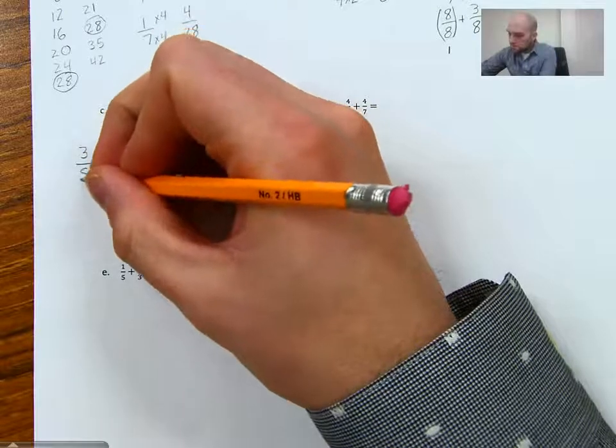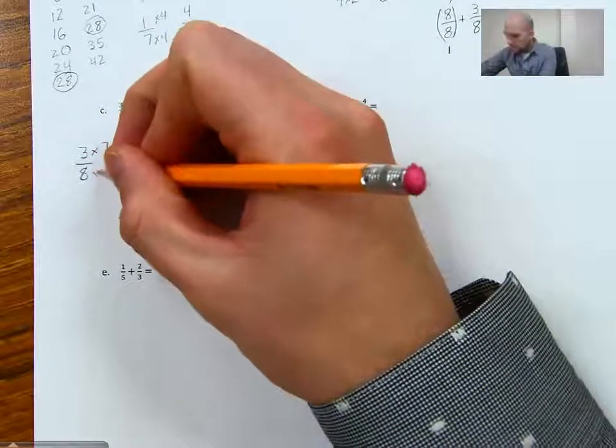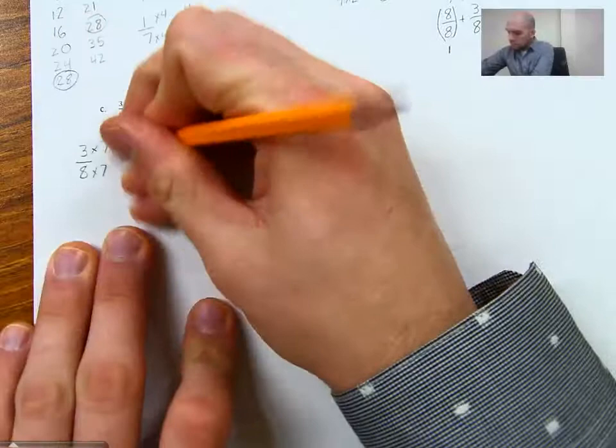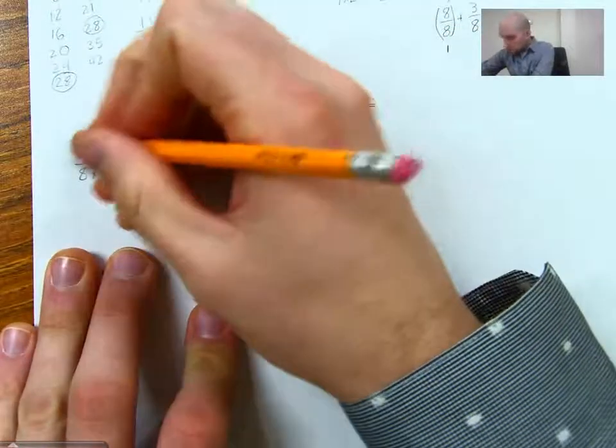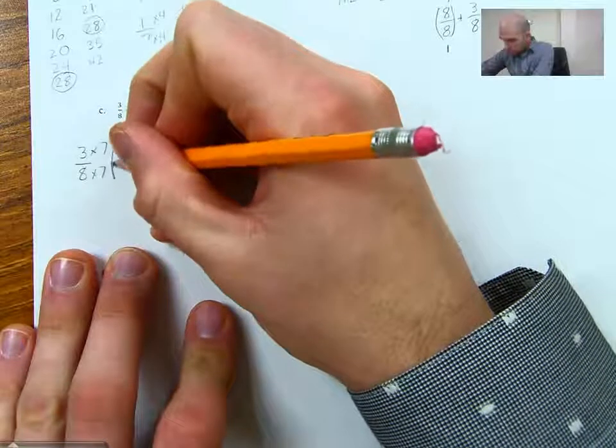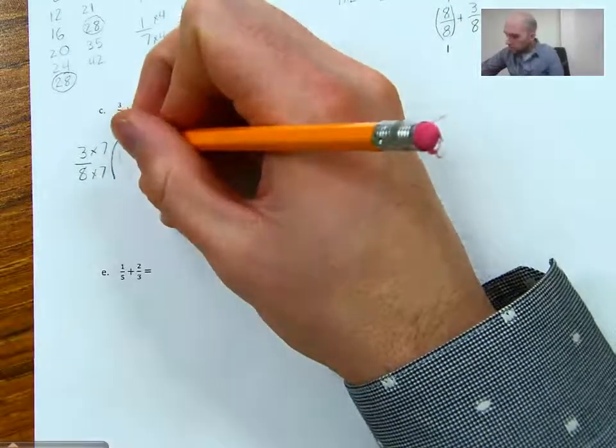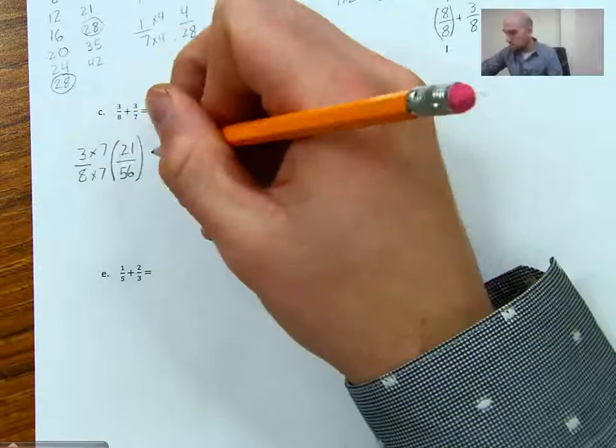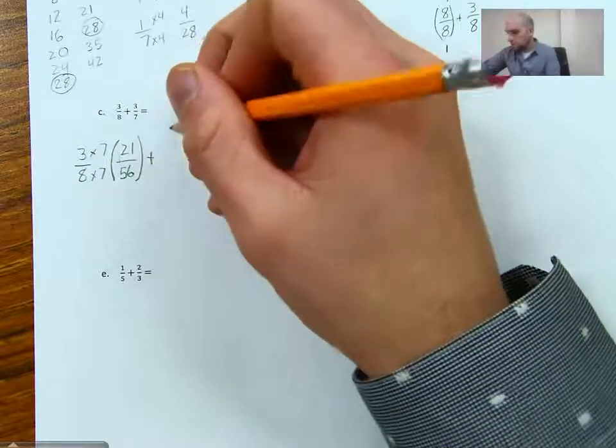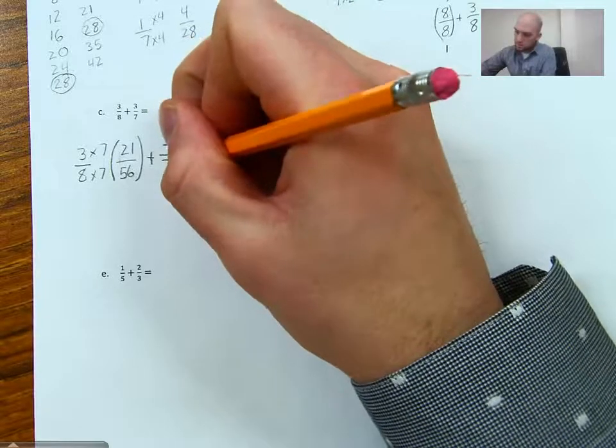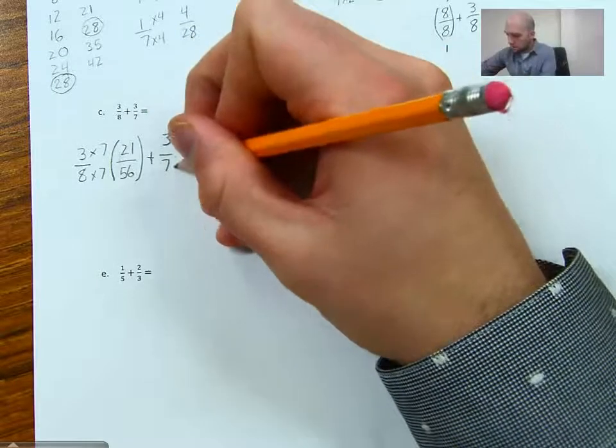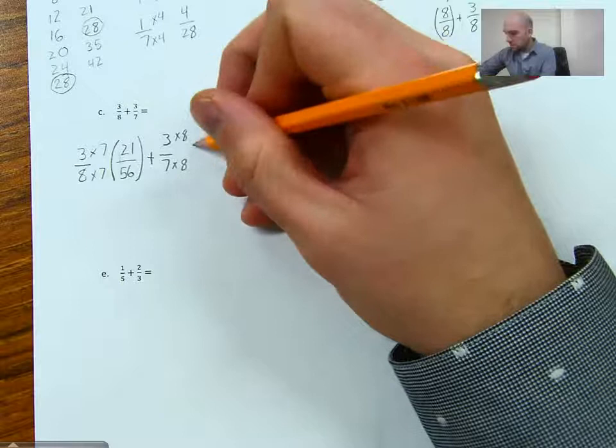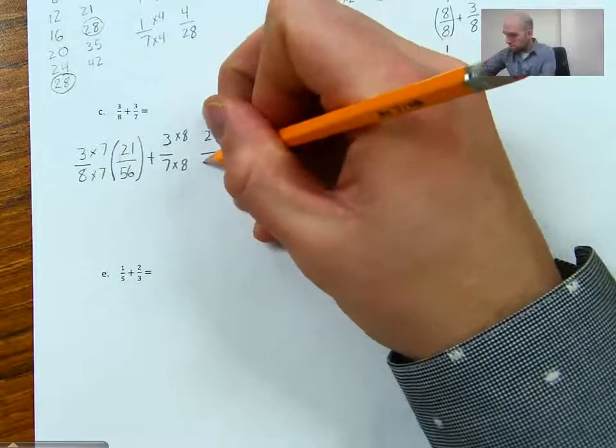3/8, and we multiply by 7 and multiply by 7. Let's solve that first. Let's keep it kind of organized here. 21/56, plus, and then we have 3/7, times 8, times 8 to get to 56. 3 times 8 is 24/56.